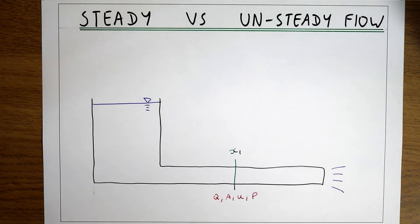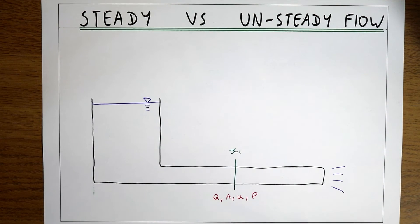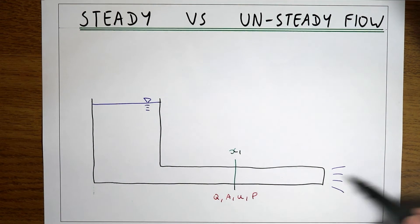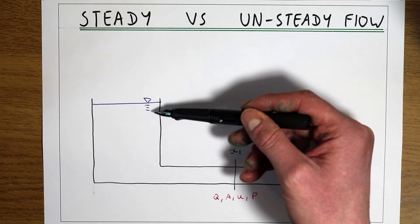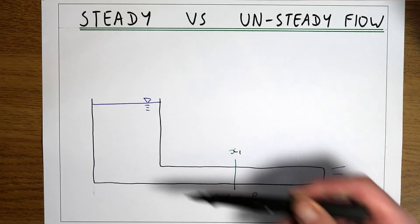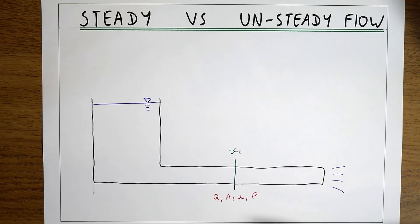We can think of an example by looking at the system we've drawn here. We've got a tank of water with a pipe coming out and a flow going out at the end of the pipe. If the system is just as we've drawn here, then this flow is going to be unsteady because as the water comes out the pipe, the water level in the tank is going to drop, and that's going to cause the discharge, the velocity, and the pressure to drop as time goes along.